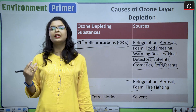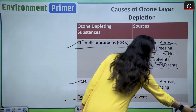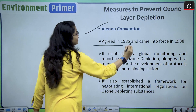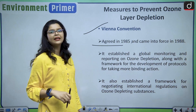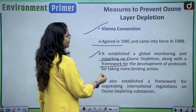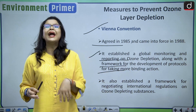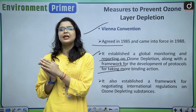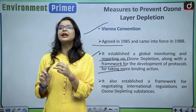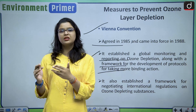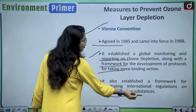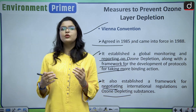Now let us analyze the measures taken to prevent the depletion of the ozone layer. The first international convention in this regard was the Vienna Convention, agreed in 1985 and which came into force in 1988. It established a global monitoring and reporting system on ozone depletion, along with a framework for developing protocols for more binding action. It also established a framework for negotiating international regulations on ozone depleting substances.